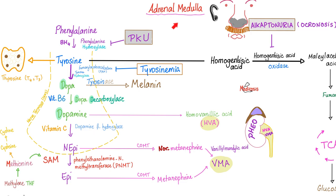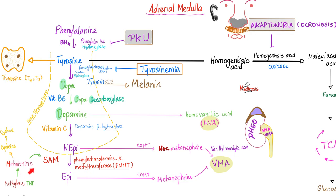Do you remember the story of the adrenal medulla? Phenylalanine → tyrosine → DOPA → dopamine → norepinephrine → epinephrine. You see that? That is SAM. Where did SAM come from? Methionine. What is SAM? A methyl group donor. Where did it get the methyl group? From methionine, because methionine contains methyl and also contains sulfur.